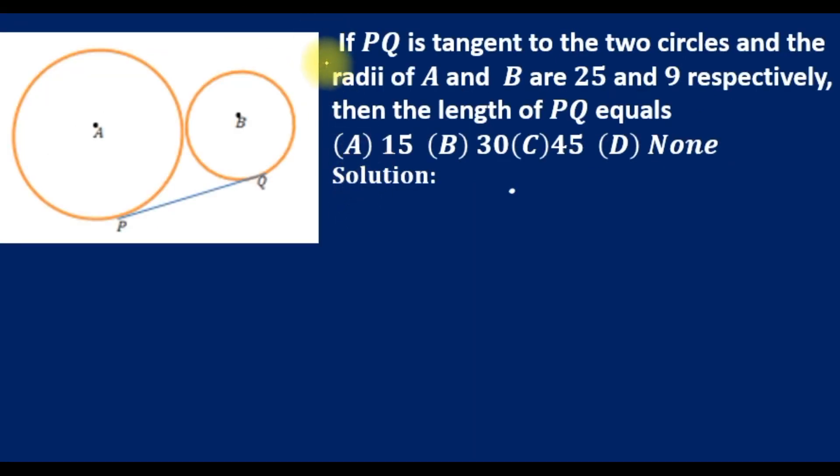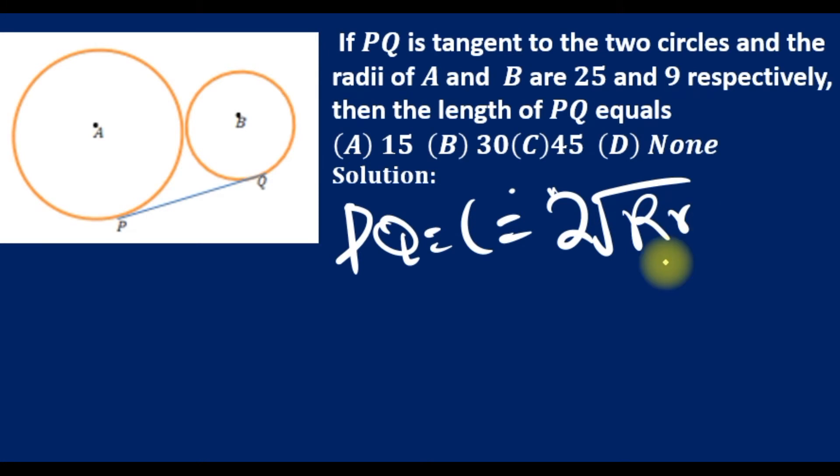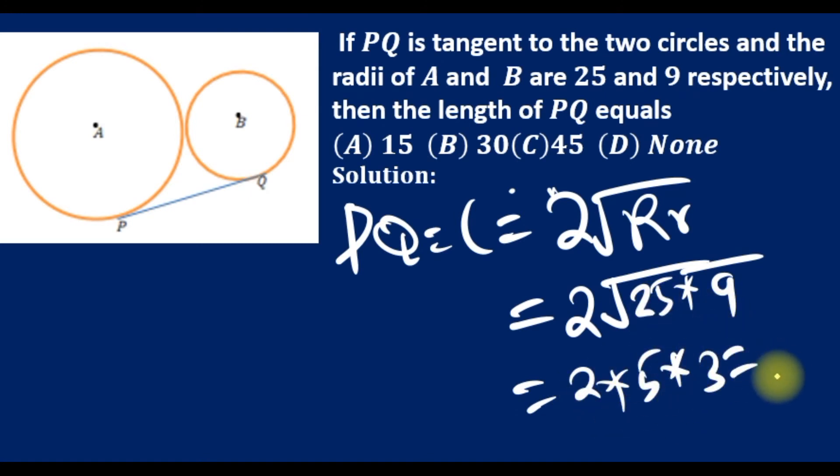Look at this quick example: if PQ is tangent to two circles and the radii are 25 and 9 respectively, find the length of PQ. Using our formula, PQ equals 2 times square root of Rr. The radii are 25 and 9, so square root of 25 is 5, square root of 9 is 3, so the answer is 30.